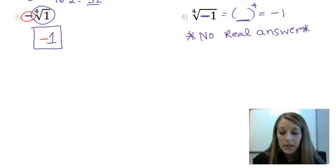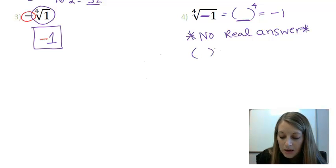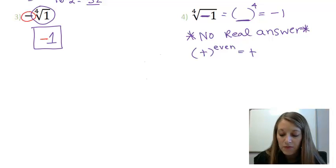And the reason is, if I take any number to an even power, it will always end up to be a positive number. A positive number to an even power gives me positive, and a negative number to an even power always ends up to be positive.